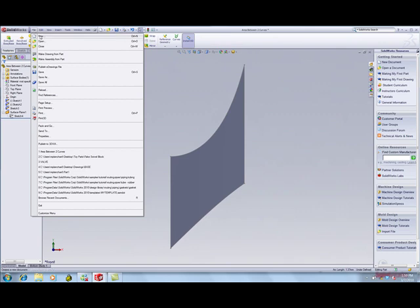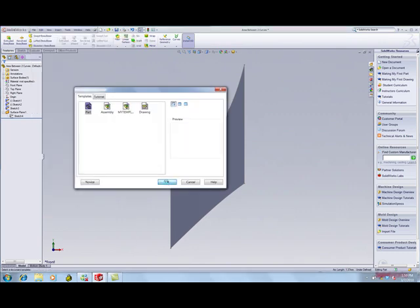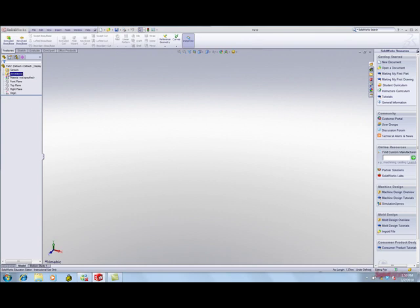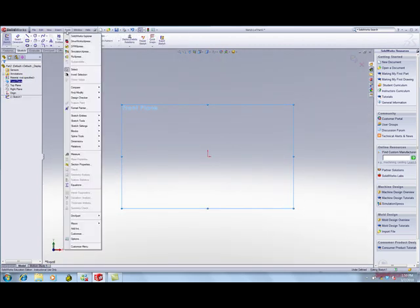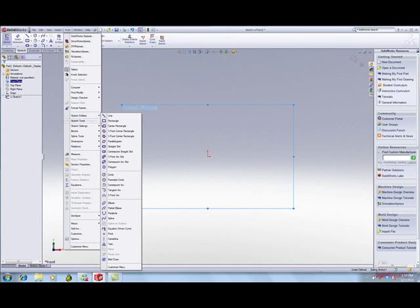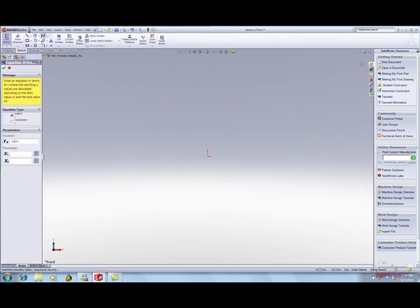How would you create this area in SOLIDWORKS? First, create a new part. Right-click on the front plane and click Sketch. We need to create two sketches on the front plane. Click Tools, Sketch Entity, Equation Driven Curve.